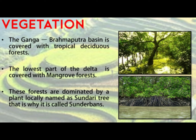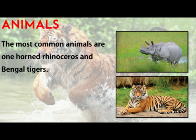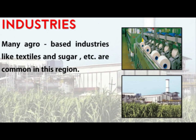The lowest part of the Ganga delta is covered with mangrove forest. These forests are dominated by a plant locally named Sundari, which is why the area is named Sundarbans. The animals commonly found in the Ganga-Brahmaputra Basin are the one-horned rhinoceros and Bengal tigers. The most important wildlife sanctuary is Sundarbans wildlife sanctuary, which is the home for various wild animals. Due to good agricultural production, many agro-based industries like textiles and sugar are commonly found in this region.